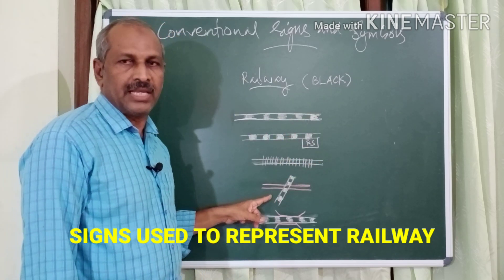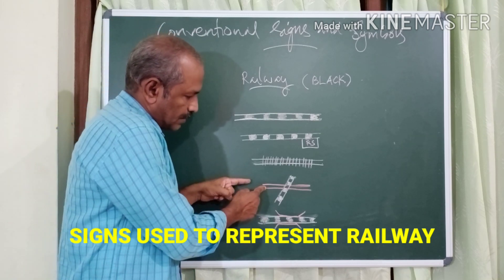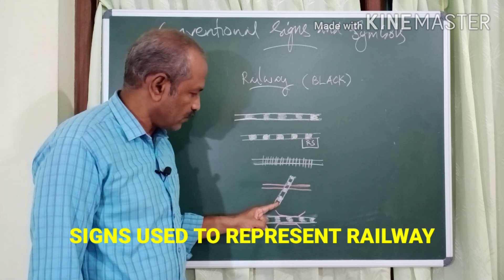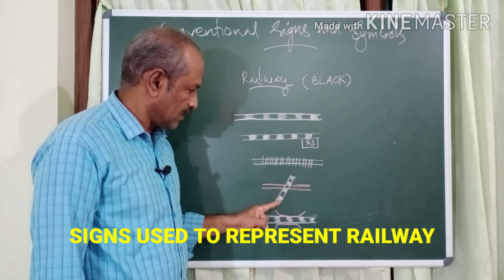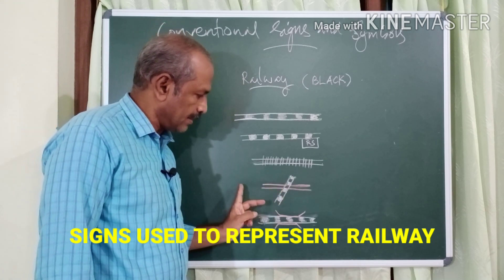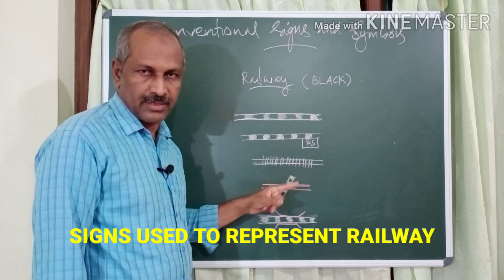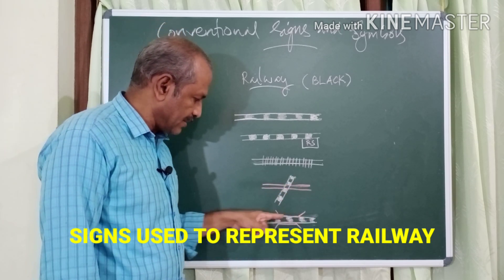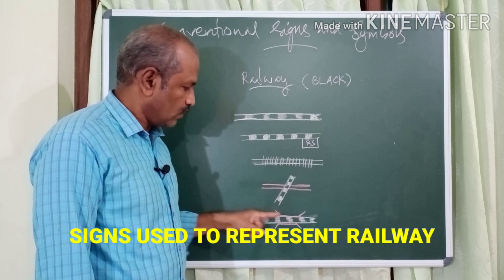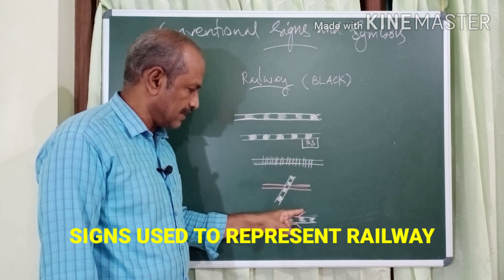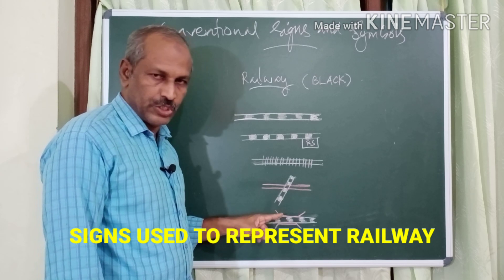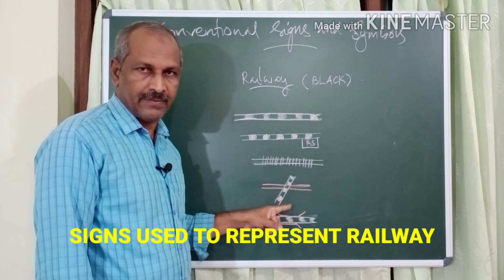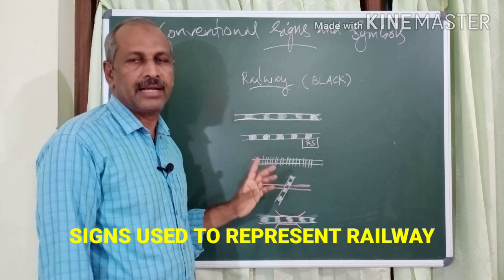Here the red parallel lines show a road, and the railway track crosses it — that is a level crossing. And this symbol shows a railway track in black color with the symbol of a bridge on either side, representing a railway with a bridge. The bridge symbol is in red color while the railway is in black.